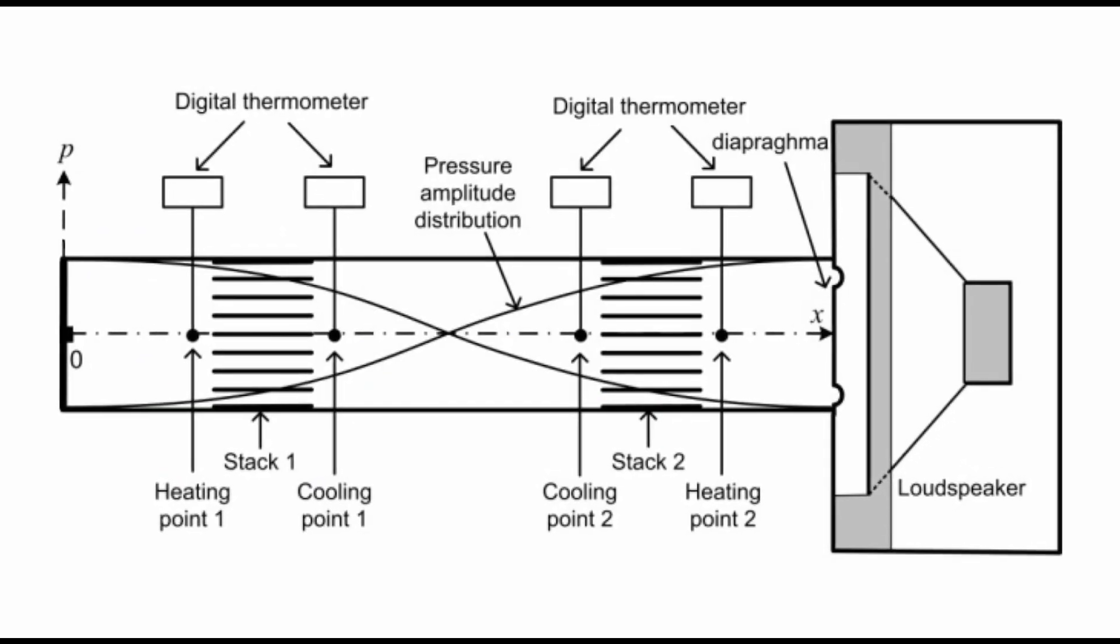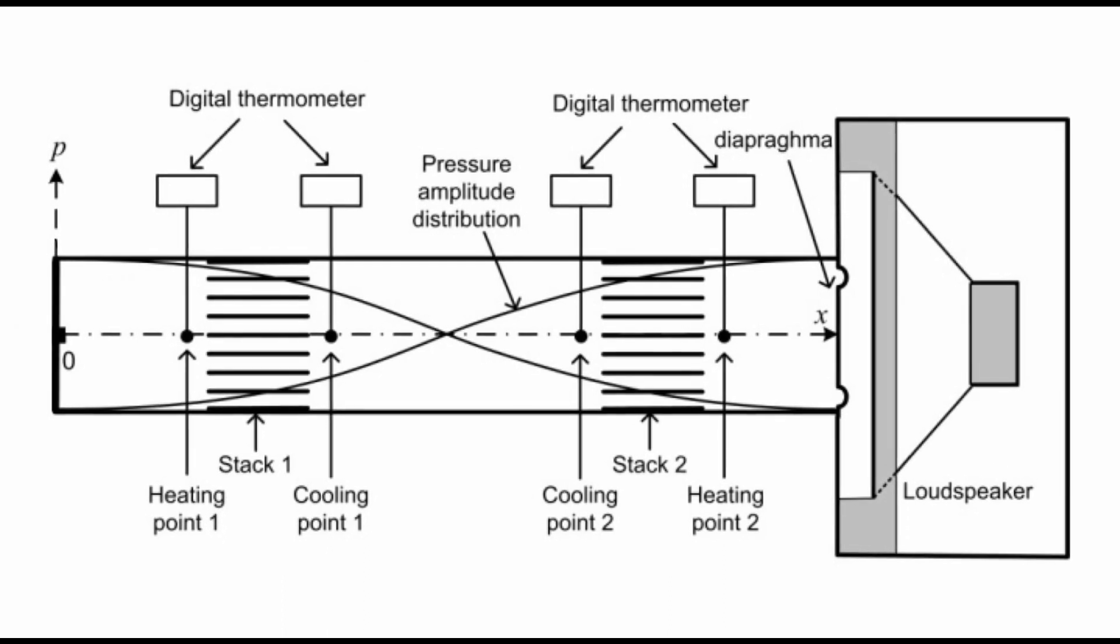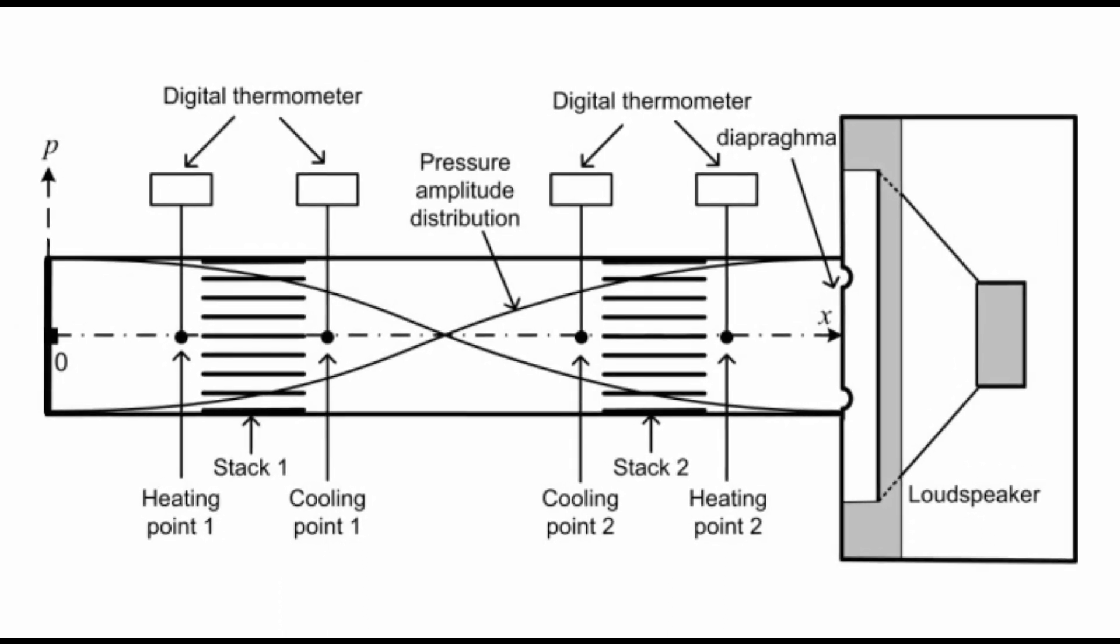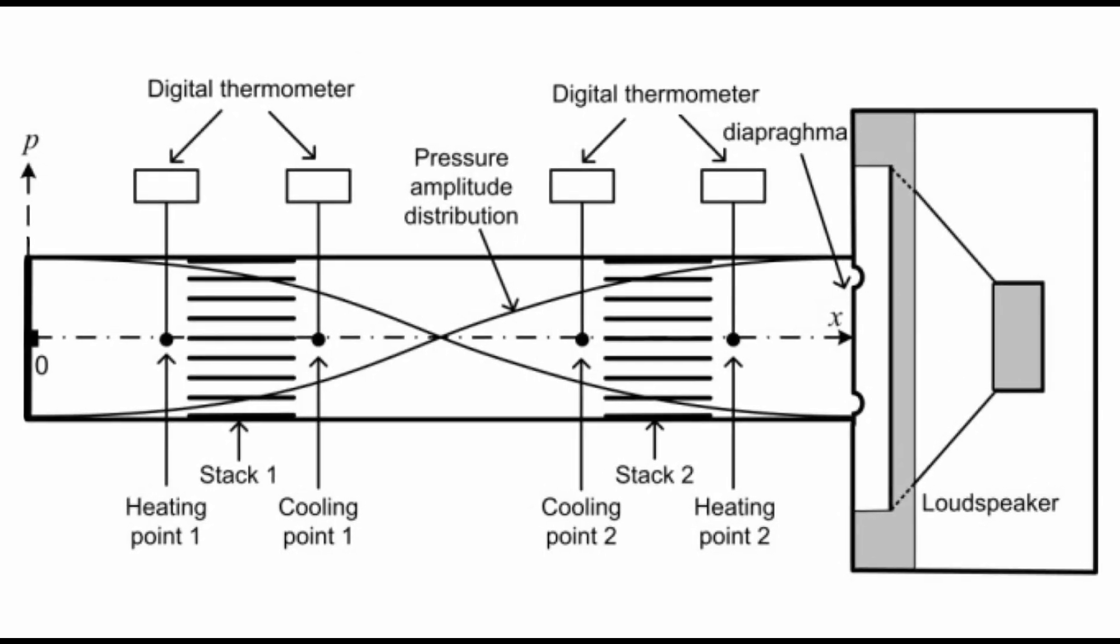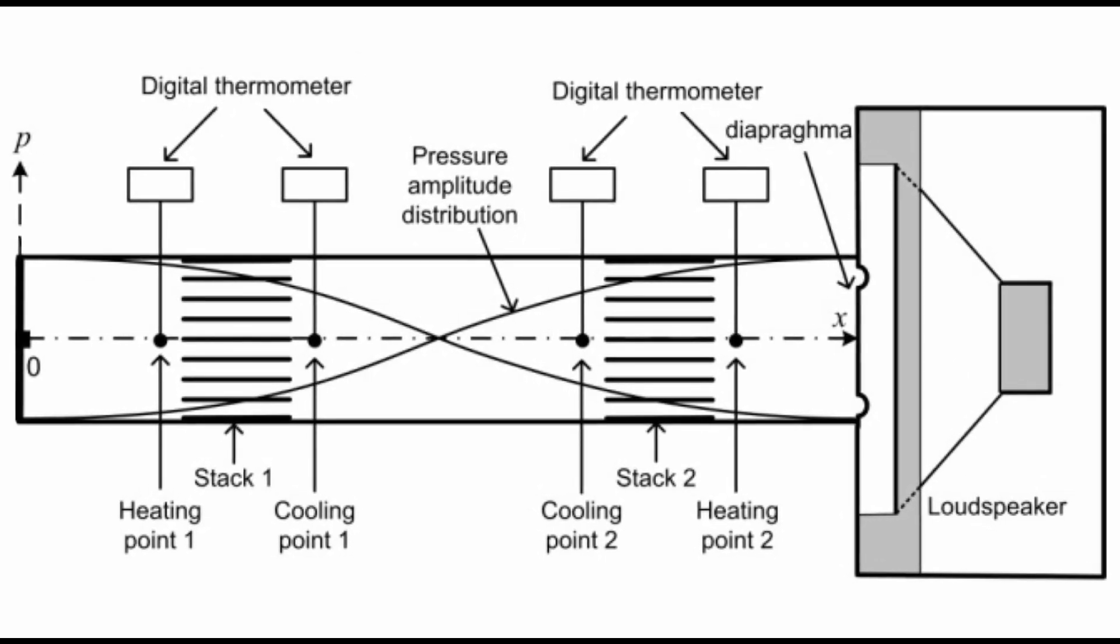In a half wavelength resonator we have two intersections. So we could use two stacks in a unit to pump heat from cold to hot side. But the other stack will work as a mirrored one.